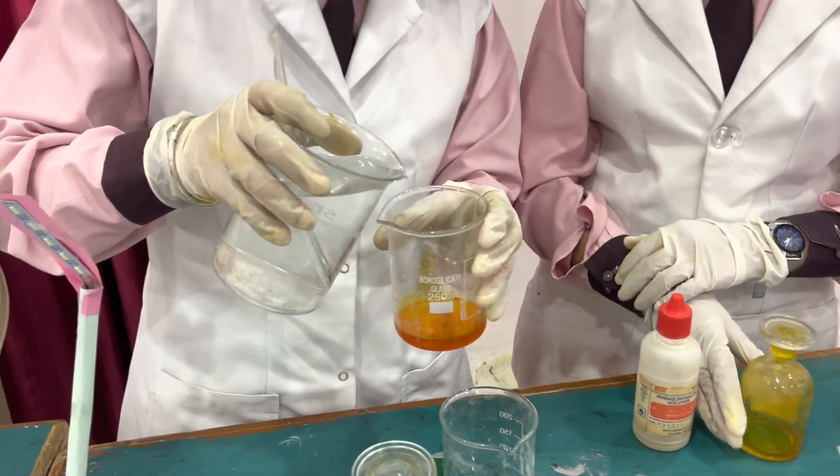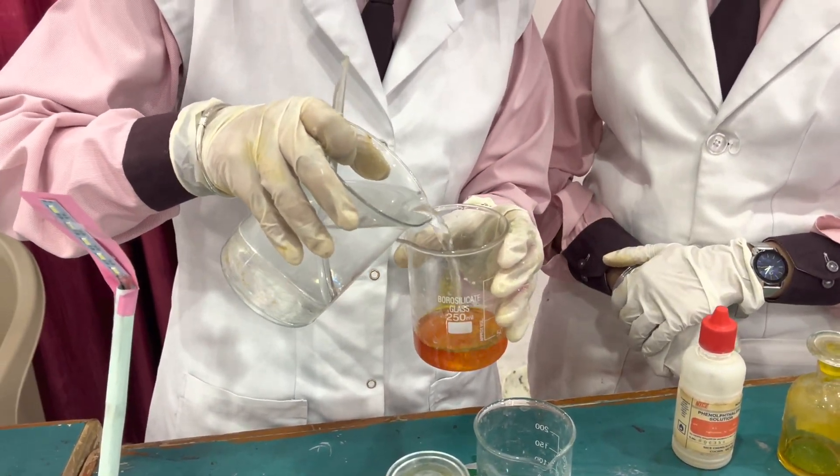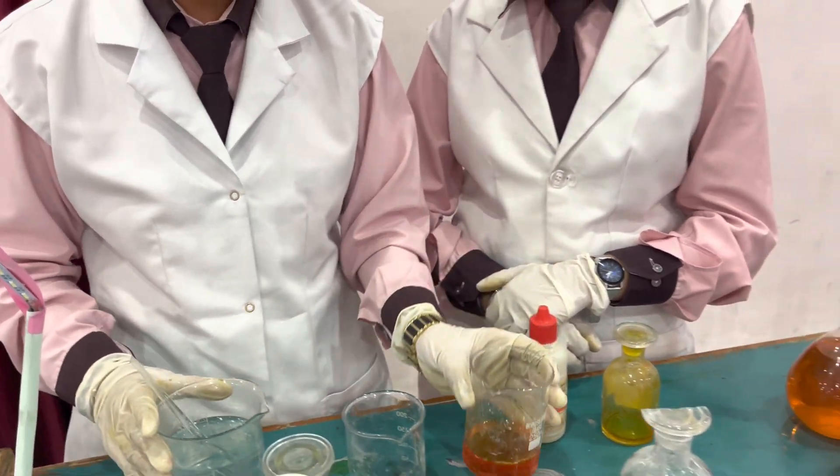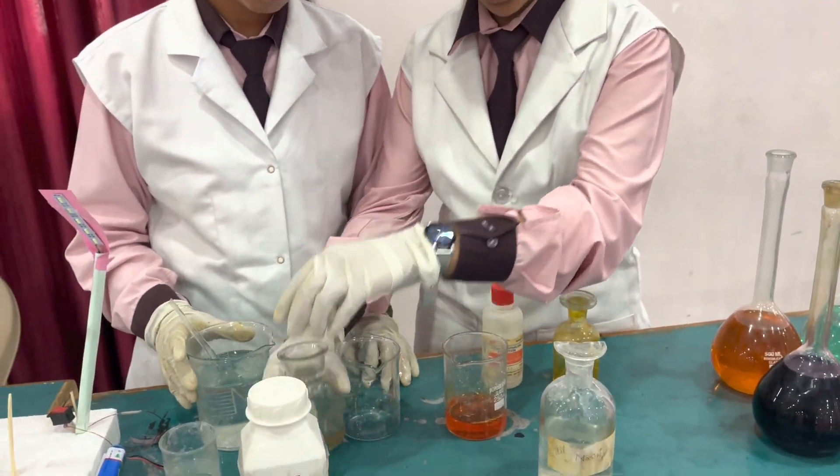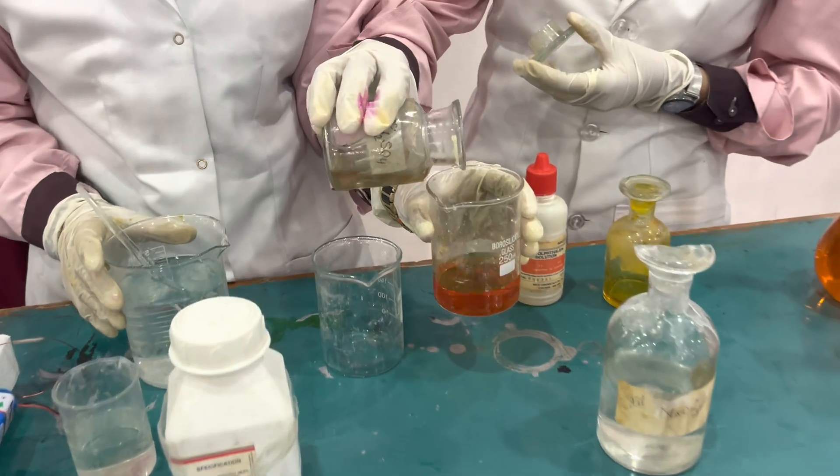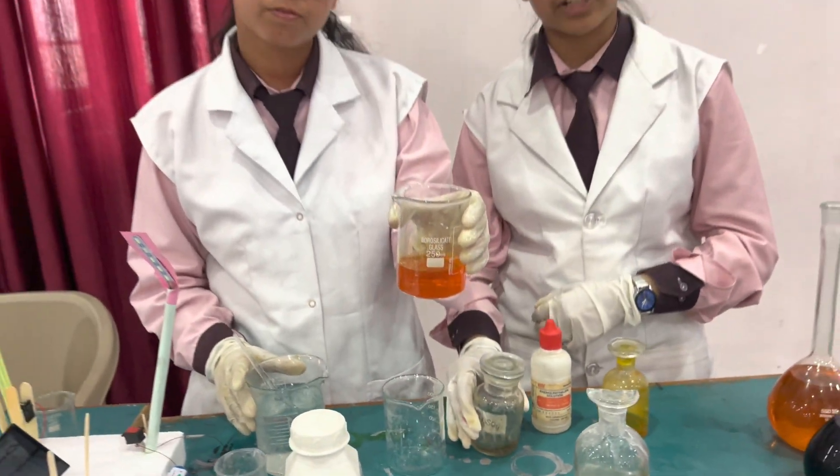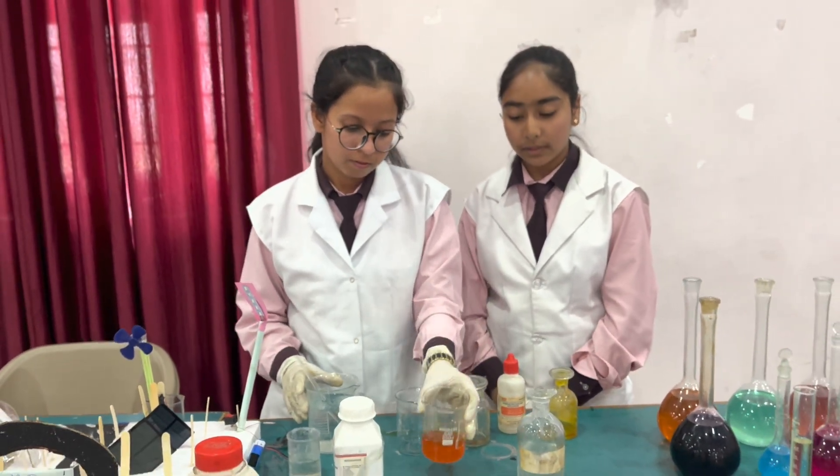Now we will add base and it changes color from orange to yellow, forming potassium chromate. After adding H2SO4, it regains its orange color and potassium dichromate is formed again. Thank you.